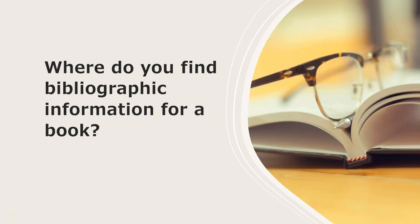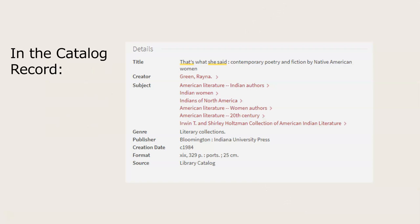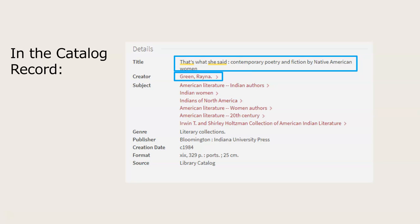So where do you find bibliographic information for a book? There are two places to look. First, you can find the information in the catalog record for that book. A catalog record will provide you with the author's name, the title of the work, the publisher, and the date of publication — all of which are parts needed for creating your book citation.